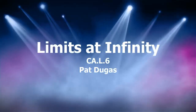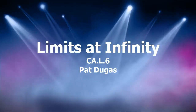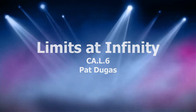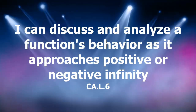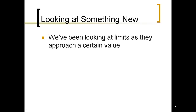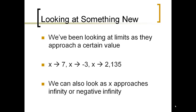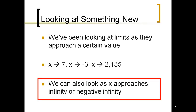Now let's talk about what happens in a function as the x values, or the input values, approach infinity. This is different from what we had learned previously, where the output values are approaching infinity. Now we're talking about input values coming to the far right and left along the horizontal axis, looking at a function's left-hand and right-hand extremes as x approaches infinity or negative infinity.